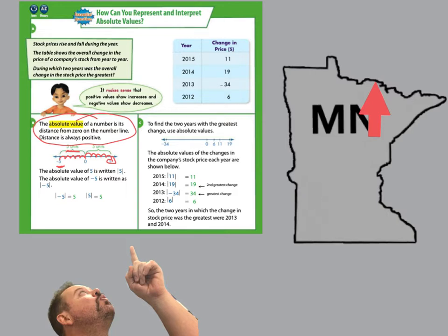On my map I have an arrow that represents Minnesota and kind of where we live. If we're in Virginia, which is about the bottom of the arrow, and we're going up to Canada, it's about 100 miles roughly to the border. If we go down to the cities, that's about 200 miles. So here's ground base zero — Virginia. If I go north it's 100 miles. Does that mean if I go south we're going negative miles? No — positive miles. Every distance is always positive. So absolute value means distance to zero.